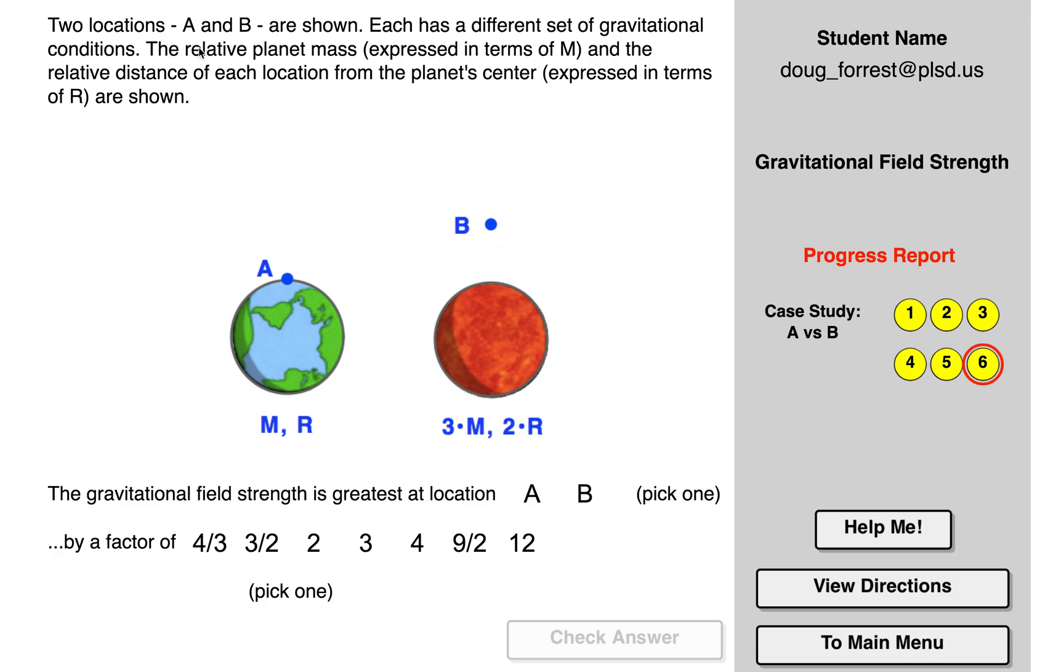In this case, two locations are shown, each has a different set of gravitational conditions. Relative planet mass and relative distance are shown. Gravitational field strength is greatest at location A or B. So this is going to be mass—assume that the object is the same mass because it cancels out—so mass over 1 squared, so that's 1 over 1 squared, so that's 1. This is 3 over 2 squared. 2 squared is 4, so that's 3 quarters. So the gravitational field strength is greatest at location A.